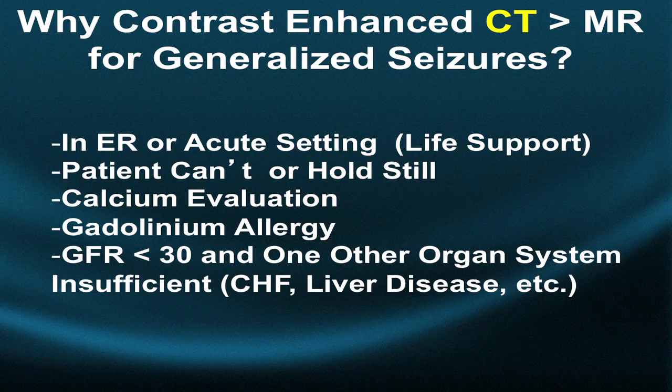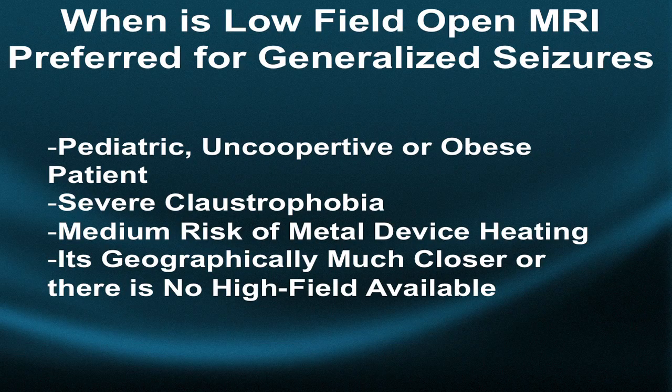If the patient has severely compromised kidney function — a glomerular filtration rate of less than 30 — and one other insufficient organ system such as the heart from congestive heart failure or the liver, CT is probably a safer modality with contrast than MRI, due to a very rare but serious systemic reaction called nephrogenic systemic fibrosis.